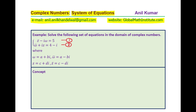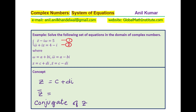Before getting into the solution, let's review a few important things. If Z is a complex number c plus di, then Z-bar, the conjugate, is c minus di. This is very important to understand.